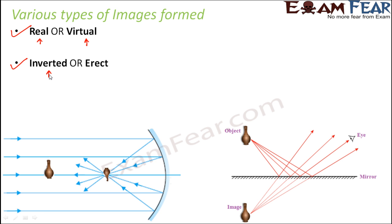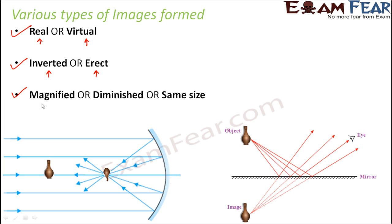The image could also be inverted or erect. Additionally, the image could be magnified — meaning its size is larger than the object — diminished, meaning smaller than the object, or of the same size as the object. It depends on many factors, particularly the type of mirror being used, which determines where exactly the reflected rays meet. It has been observed that real images are mostly inverted, while virtual images are mostly erect.